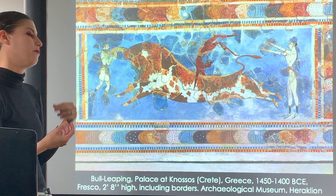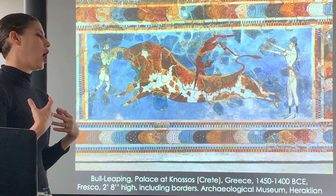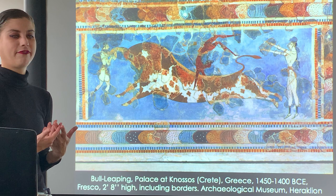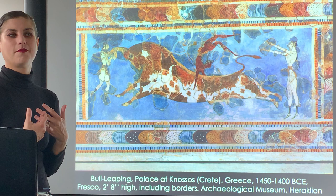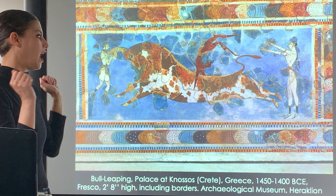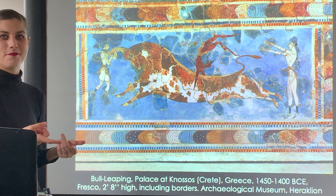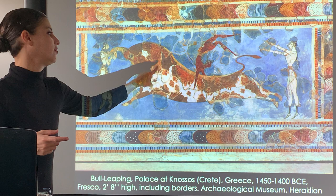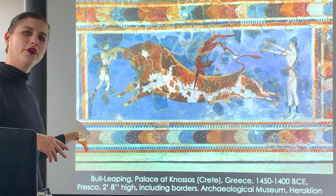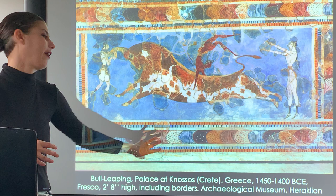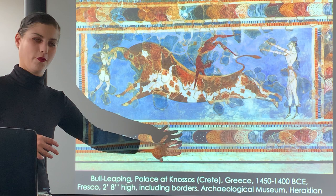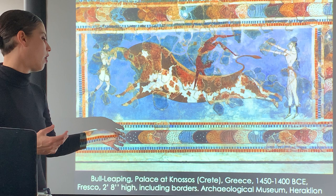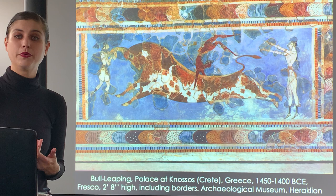The bull leaping fresco probably best captures the Aegean curvilinear movement and love for life, showcasing an ancient ritual of bull leaping. Literally the acrobat grabs onto the horns of the bull and does a somersault on its back - quite the spectacle in the ancient Aegean. The exaggerated curve of the arch of the bull's back is fascinating, and the border shows a real affinity for pattern that looks very contemporary. The colors are rich and beautiful.